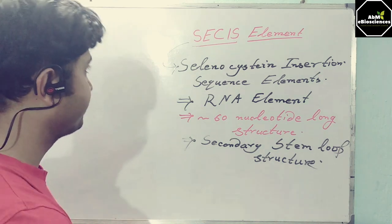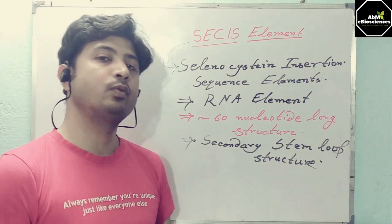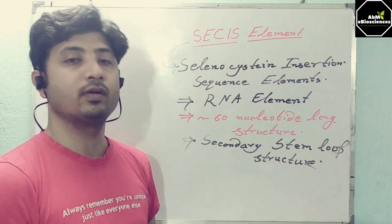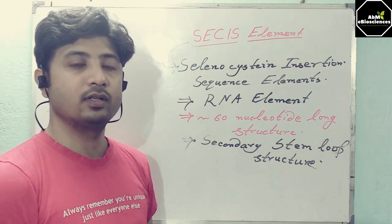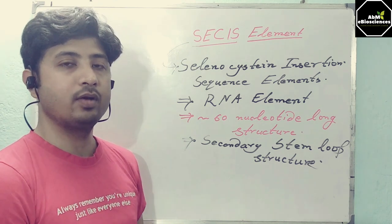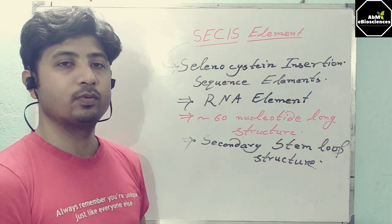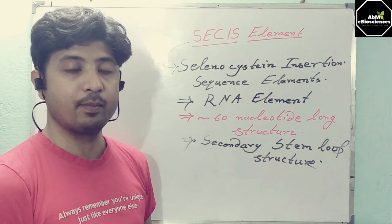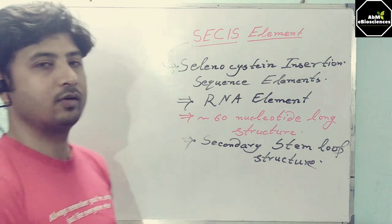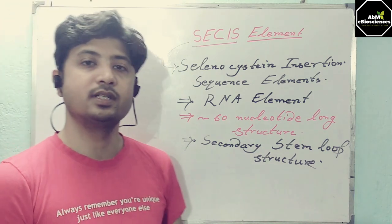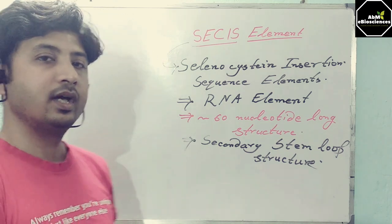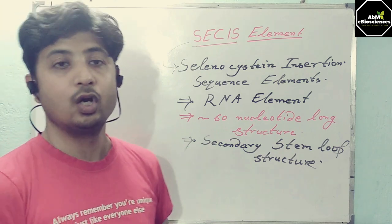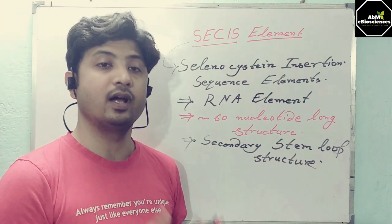Why is it important? Because you may have heard that some proteins contain selenocysteine as their amino acid. It is a very recently discovered amino acid which most crucial or exceptional proteins bear. The insertion of selenocysteine into that protein is mechanistically done by the SECIS element, which resides in the RNA.